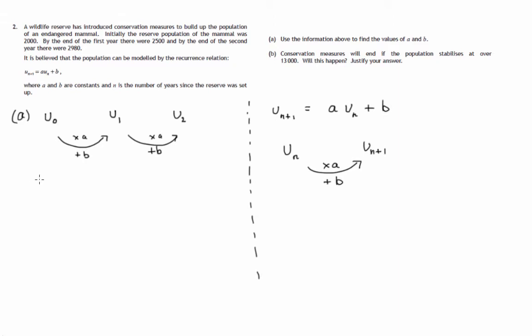So what do we know? We know that we start out with 2,000 and after one year we end up with 2,500. So that process, multiplying by A and adding B, will lead us from 2,000 to 2,500. And similarly, to get to two years later population 2,980, same procedure. Multiply by A and add B.